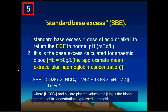Then we come to the standard base excess. When we measure pH, bicarbonate, or base excess of blood alone, we do not include hemoglobin — which is a large buffer — and we do not include the extracellular volume. The standard base excess is designed to measure base excess or deficit for the extracellular fluids, including hemoglobin. Here, hemoglobin is considered as 5 g% or 50 g per liter, representing the approximate mean extracellular hemoglobin concentration across the total extracellular volume of 14 liters instead of 3 liters. Normally it is about minus or plus 3 mEq per liter.